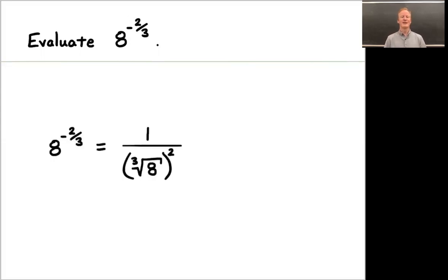Welcome back. The minus in the exponent means that this should be a fraction underneath of 1. The 2 in the exponent means that we're squaring. The 3 in the denominator means that we're taking a cube root. So start with 8, take a cube root, square it, put it in the bottom of a fraction underneath 1. What is the cube root of 8? That's 2.